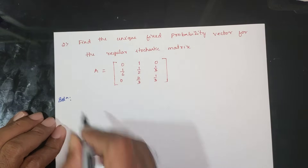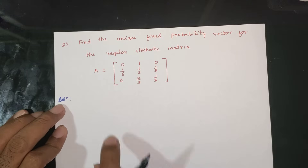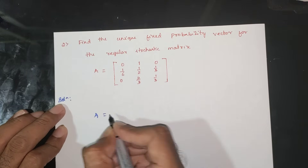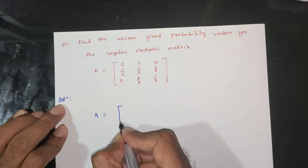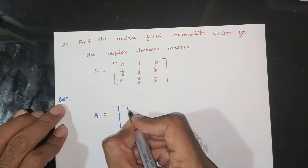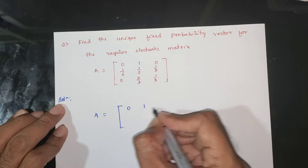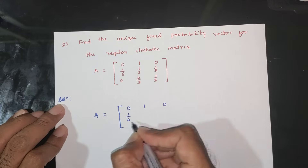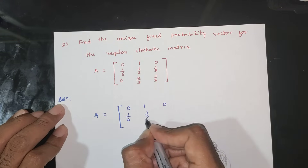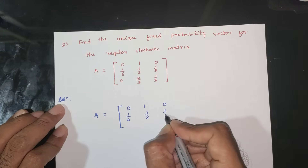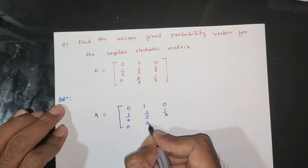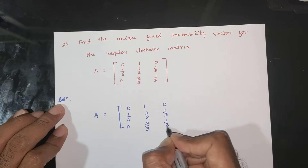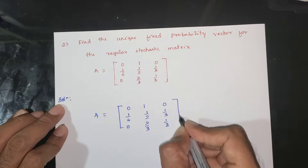First, A is equal to the matrix: row one is 1, 0, [continuing]; row two is 1/6, 1/2, 1/3; row three is 0, 2/3, 1/3.